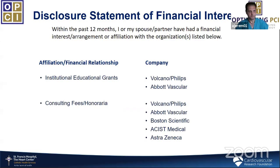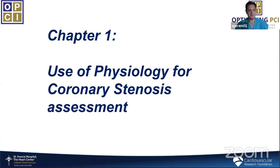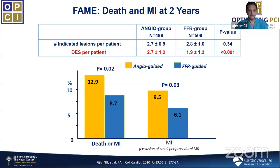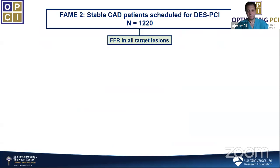Chapter one: the use of physiology for intermediate lesions — the classic role described by guidelines. The concept of functional PCI was made popular by the FAME trial, a randomized trial of about 1,000 patients comparing angiographically-guided PCI versus FFR-guided PCI in multi-vessel disease. FFR was able to downgrade many patients such that the average number of stents per patient was about one less in the FFR group, yet outcomes — death or MI — were actually better at two years.